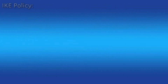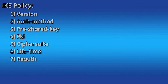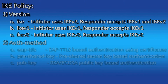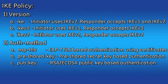Starting with the VPN service, the IKE policy contains the following parameters: version, auth method, pre-shared key, PKI, cipher suite, lifetime, and re-auth. The version command has three options: IKE, IKEv1, and IKEv2. If the Orbit is configured as an initiator and the version is set to IKEv1, it will only initiate connections using IKEv1. If it were a responder set to IKEv1, it would respond to both IKEv1 and IKEv2 initiators. Both ends of the tunnel must use the same version, and if IKEv2 is available on both sides, it is preferred.